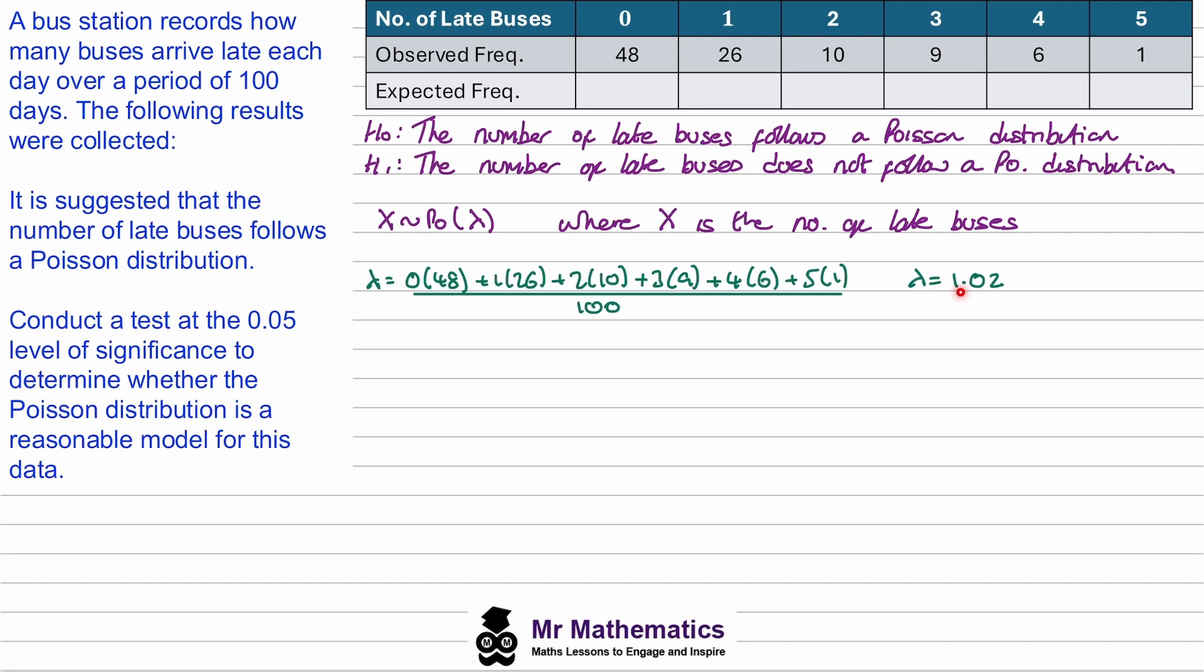Now because we've calculated lambda from our data this will take away one degree of freedom. We'll come back to that a bit later.